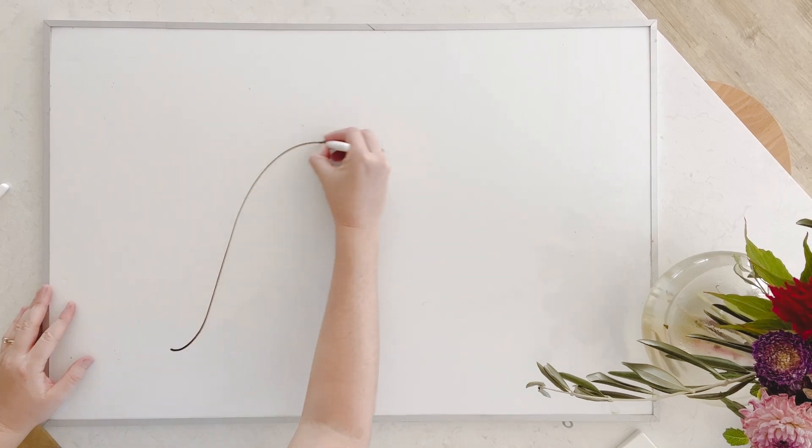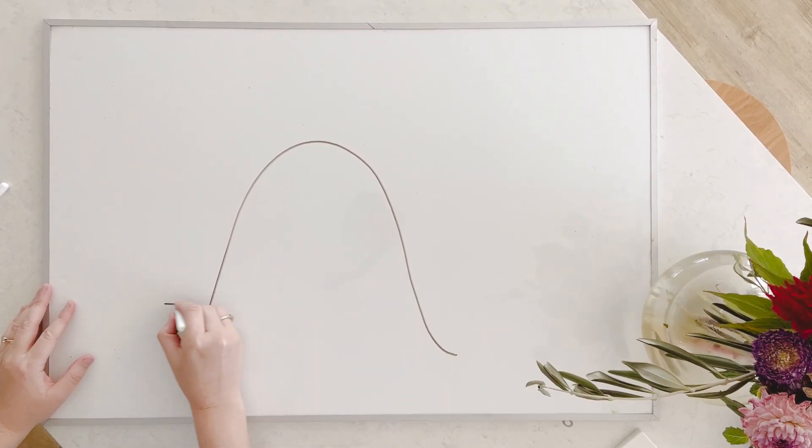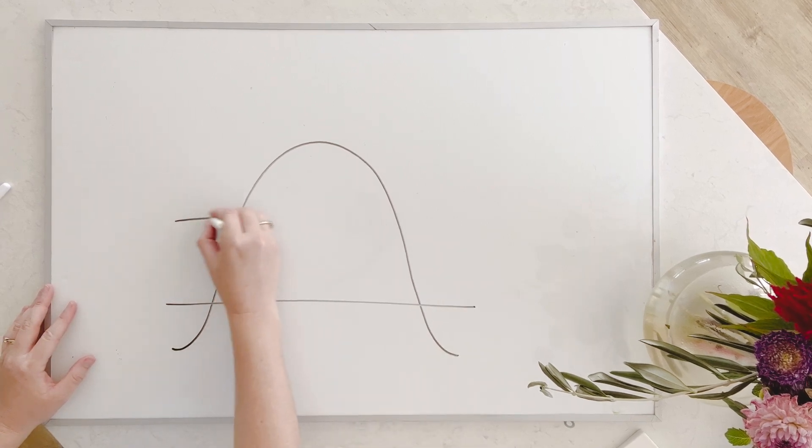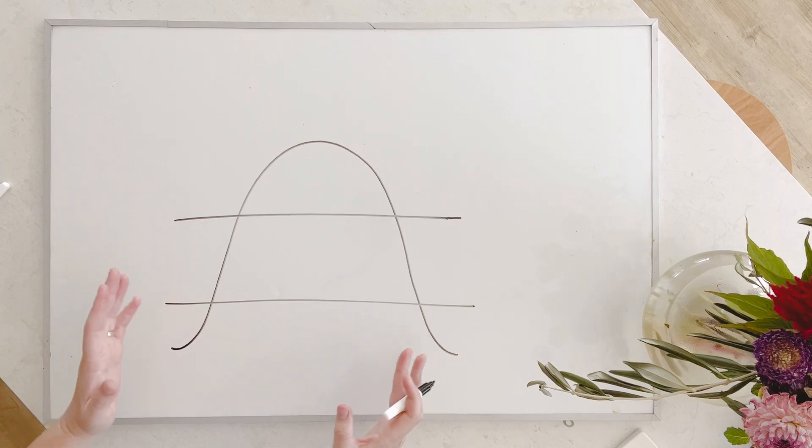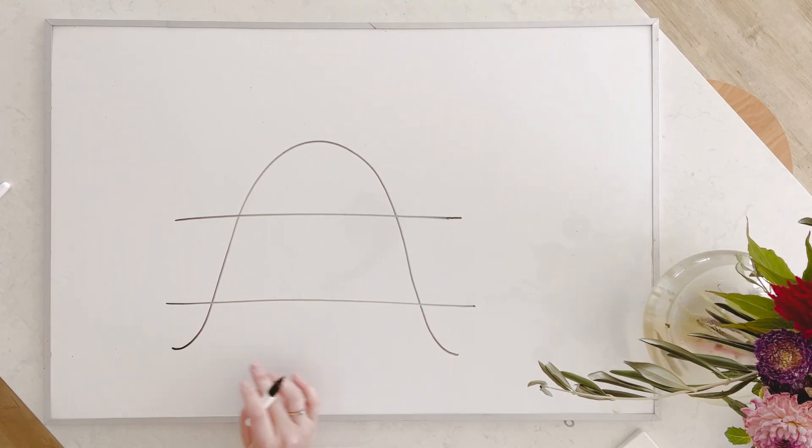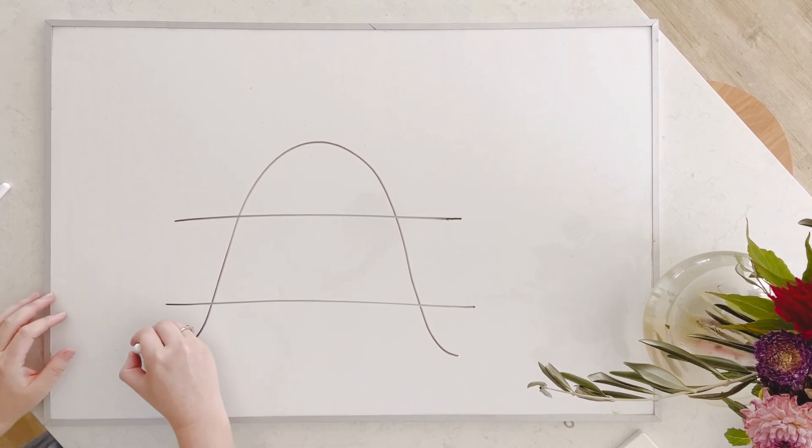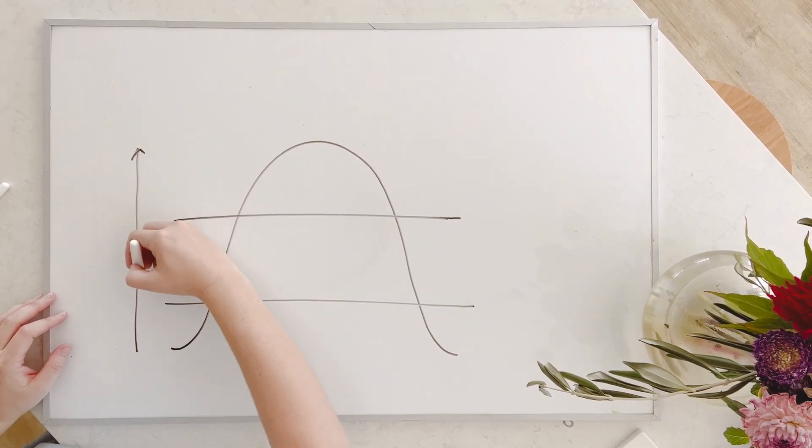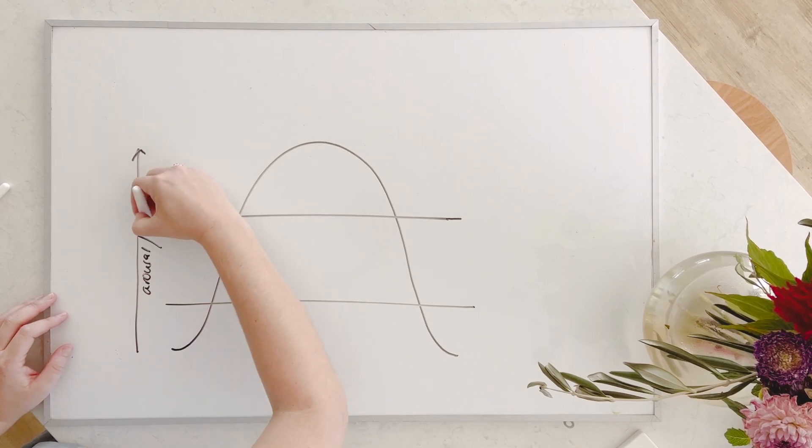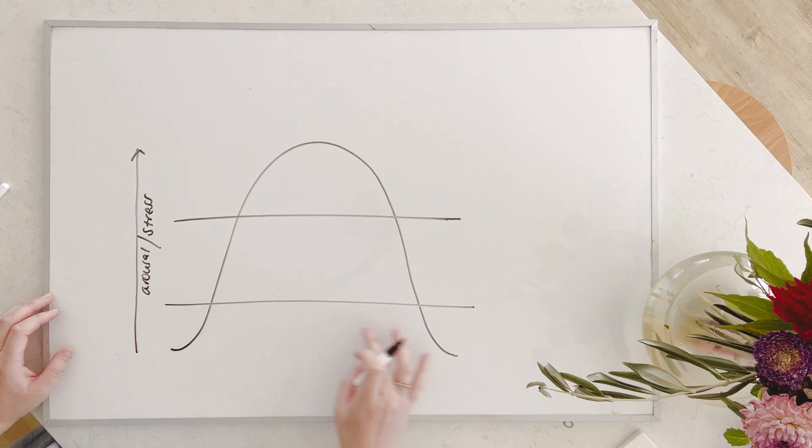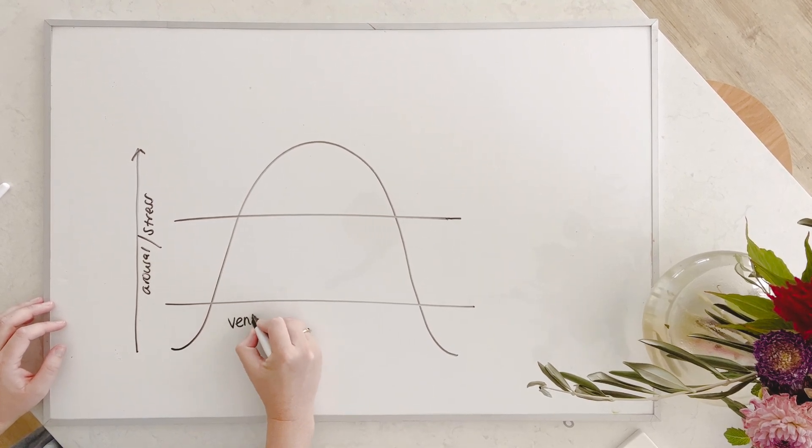So you might remember our polyvagal curve, which looks a little something like this, and then it's divided into these three sections. Now, this is just to make it distinct in our minds, but of course, in our nervous systems, it's not as distinct as this, there's much more nuance. And up the side here, this is an indication of the level of arousal or stress.